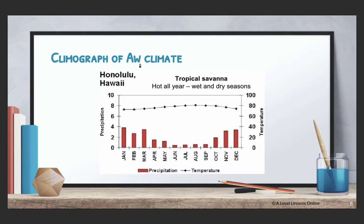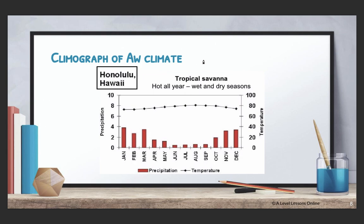Looking at the climograph of tropical savanna using Honolulu, Hawaii as an example — left side is rainfall, right side is temperature. There are generally 6 months of higher rainfall: January, February, March, October, November, December. The middle 6 months — April, May, June, July, August, September — tend to have lower rainfall. Temperature is generally quite high, though in this climograph it is in Fahrenheit. To determine total rainfall for a tropical savanna, you add up everything and see how much it comes to.